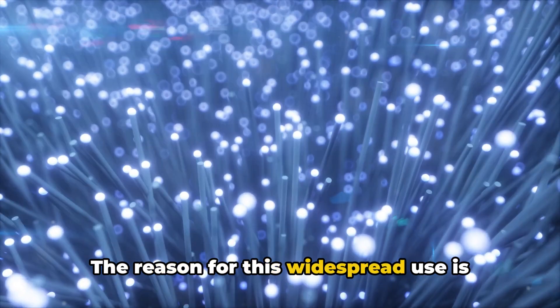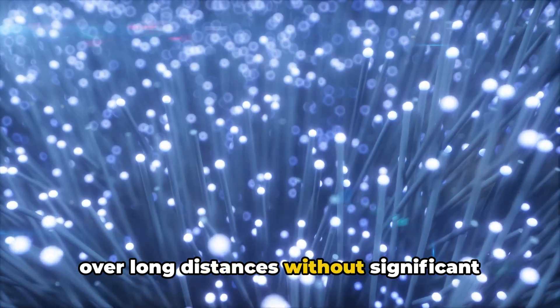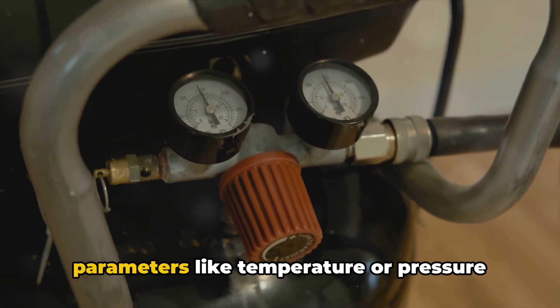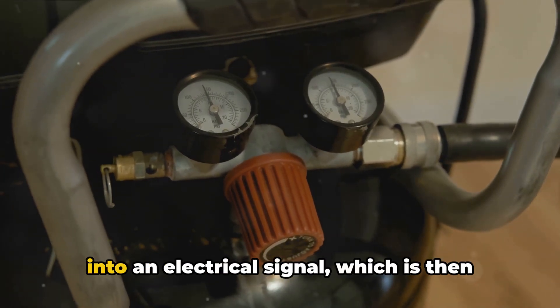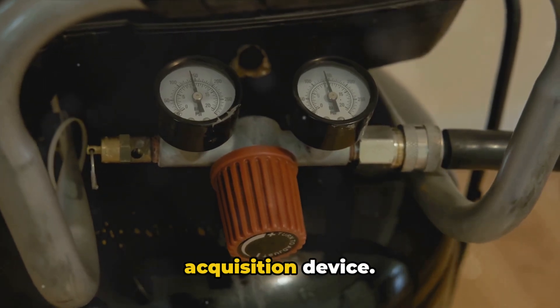The reason for this widespread use is their ability to transmit analog signals over long distances without significant loss of signal strength. These transmitters convert physical parameters like temperature or pressure into an electrical signal, which is then sent to a control system or data acquisition device.